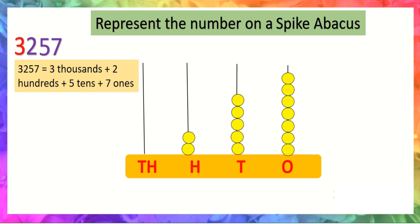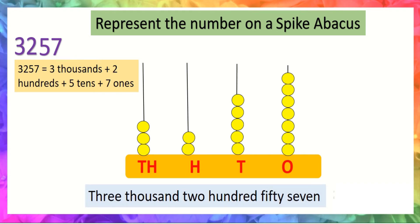At thousands place the digit is three, so we will draw three beads: one, two, three. Now represent the number in words: 3,257.